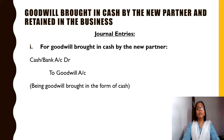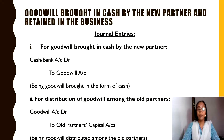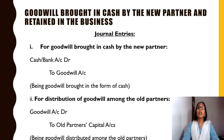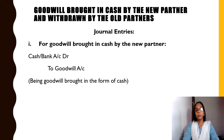Now, we know that this goodwill which is brought in by the new partner belongs to the old partners — the existing partners — and it needs to be shared among them. So when you share this goodwill, the journal entry is: Goodwill Account Dr. to Old Partners' Capital Account. When distributing this goodwill to the existing partners, remember it needs to be distributed in the sacrifice ratio. In case the sacrifice ratio details are not given in the question, the old ratio should be considered as the sacrifice ratio.